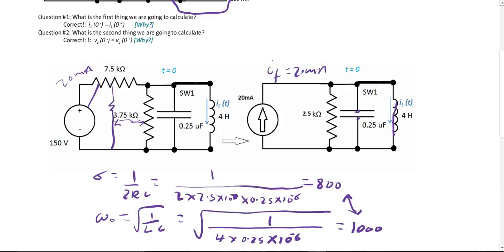20 mA will be circulating in this circuit right here. So here you're going to write your equation for IL. IL of t equals to e to the negative alpha or negative 800t, k1 cosine 600t plus k2 sine of 600t plus I final which is 20 mA.